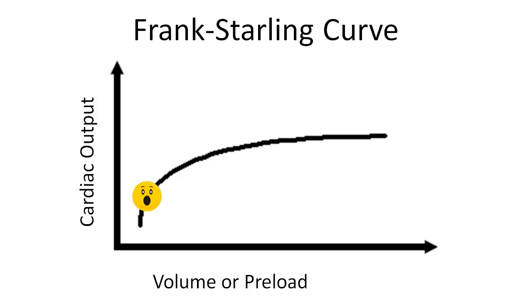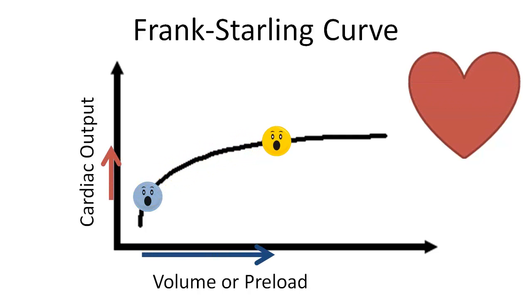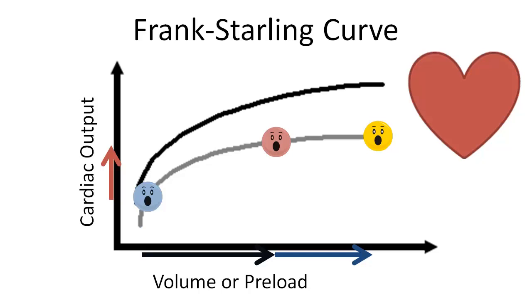If a patient is low on the Frank-Starling curve, you can conceptualize their heart as half full. If you volume resuscitate them initially, you can improve cardiac output. At a certain point on the Frank-Starling curve, the patient is no longer volume responsive and another fluid bolus no longer improves cardiac output. At that point, if the patient is still in shock, we will need other means of support like pressors or inotropes to increase cardiac output.